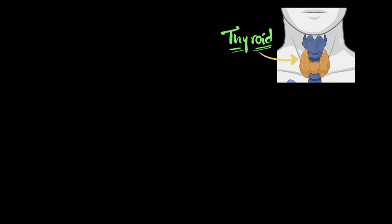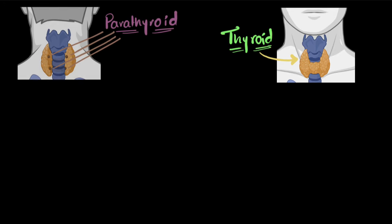This is a thyroid gland. Now if you look at it from behind, you will find these tiny, tiny glands on the backside of the thyroid gland, which is called the parathyroid gland. In this video, we'll see how the parathyroid gland regulates calcium levels in our blood. So let's begin.